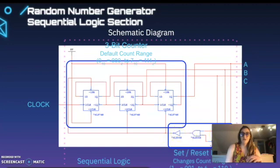We have our set and reset logic down here, so this is what changes our count range so that way we get that one to six range that we need.